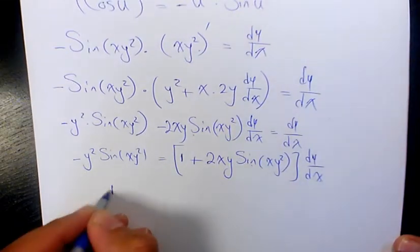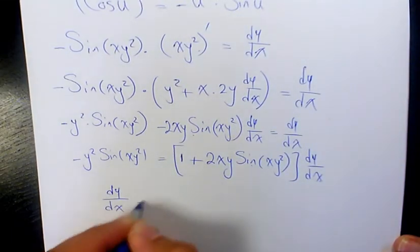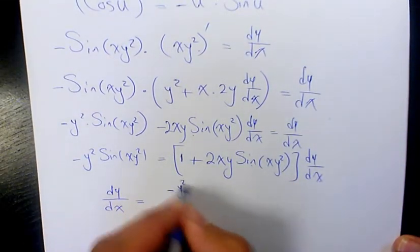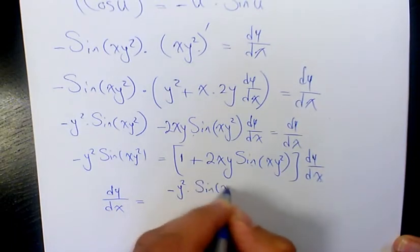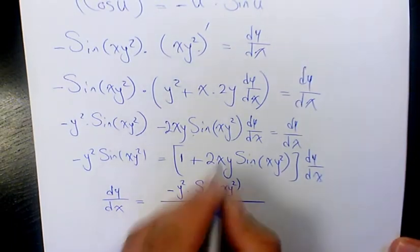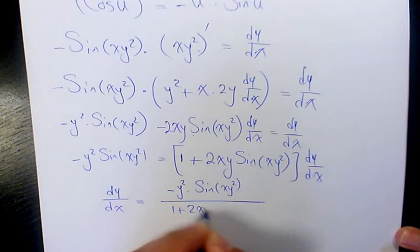So when you isolate dy over dx, you're going to have negative y squared sine x y squared divided by 1 plus 2xy sine x y squared.